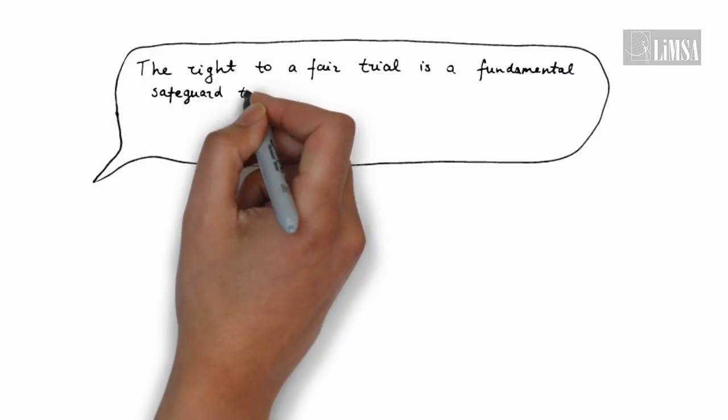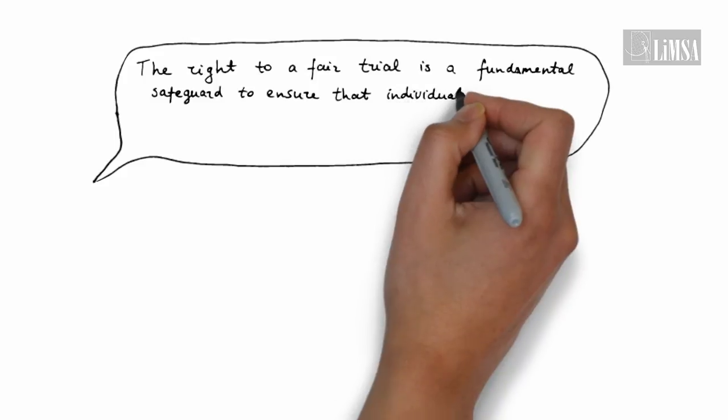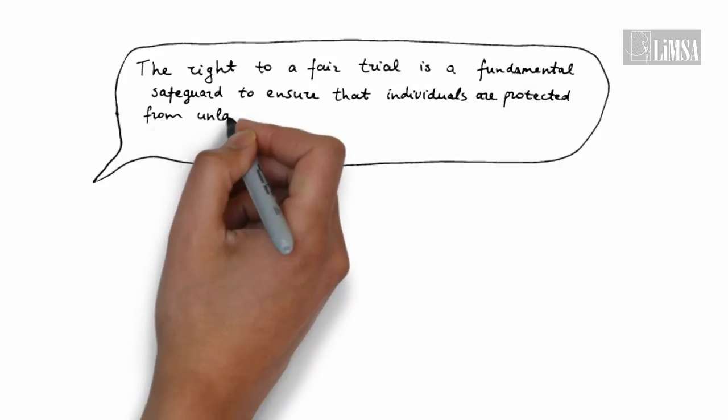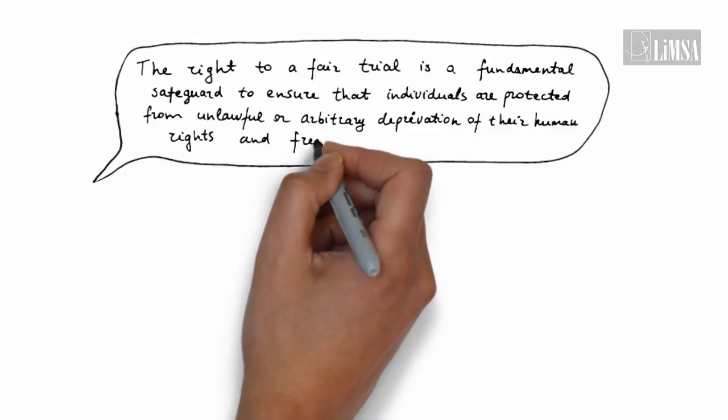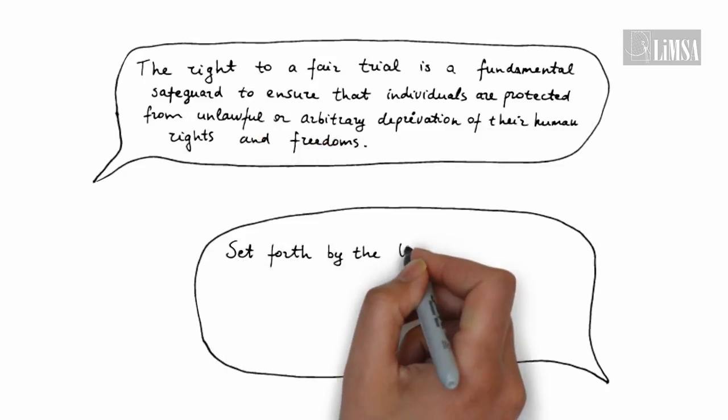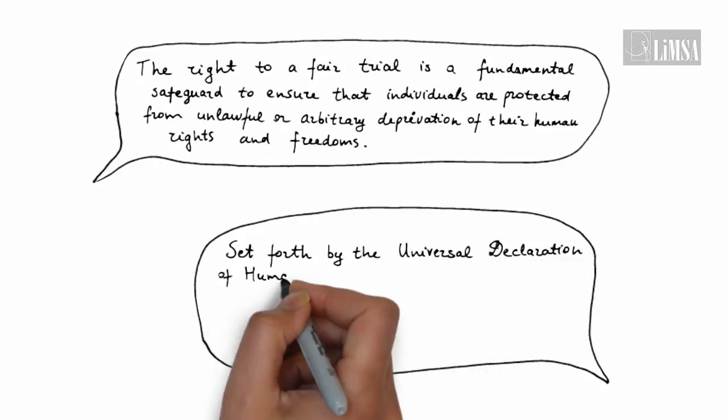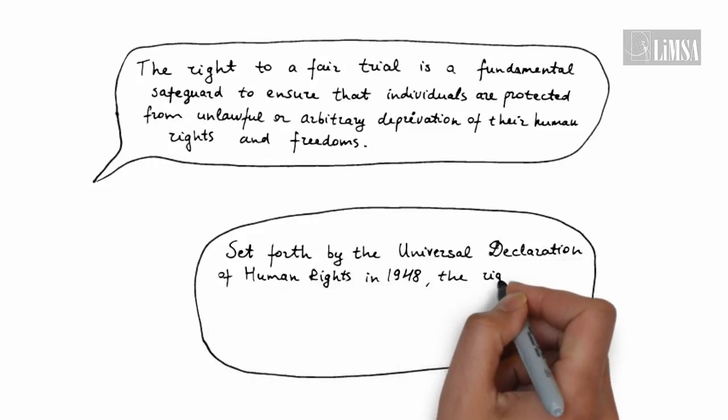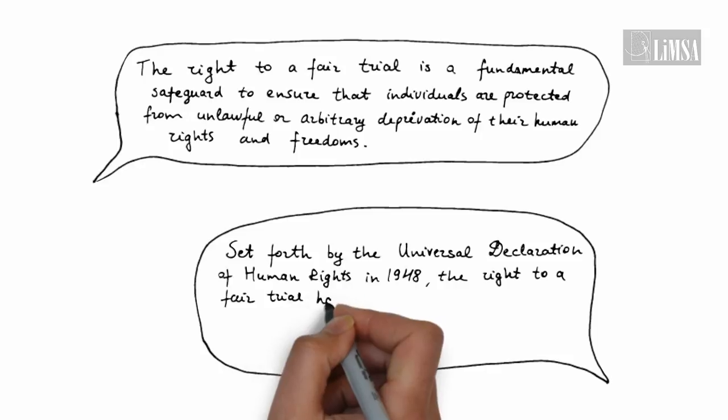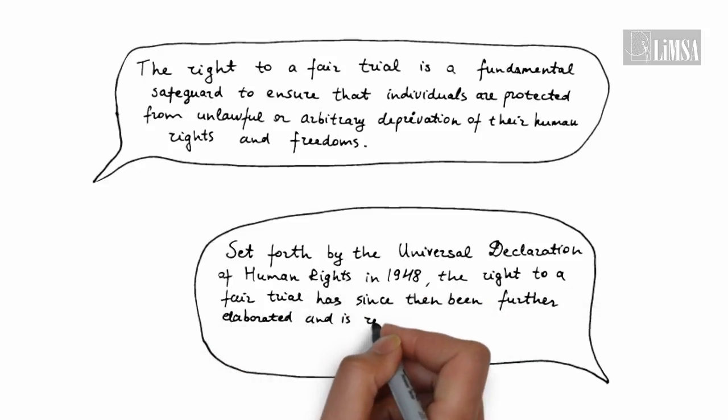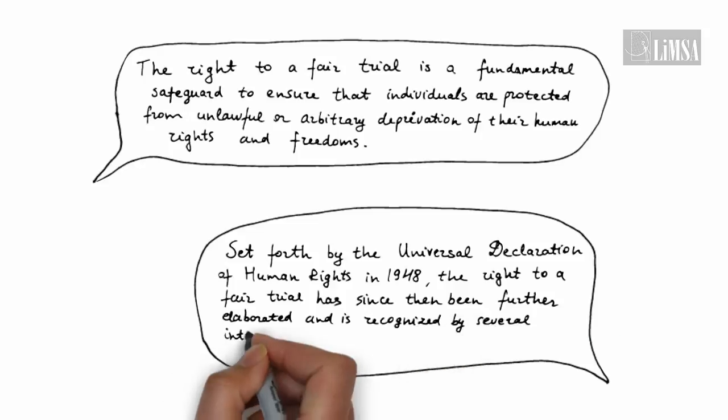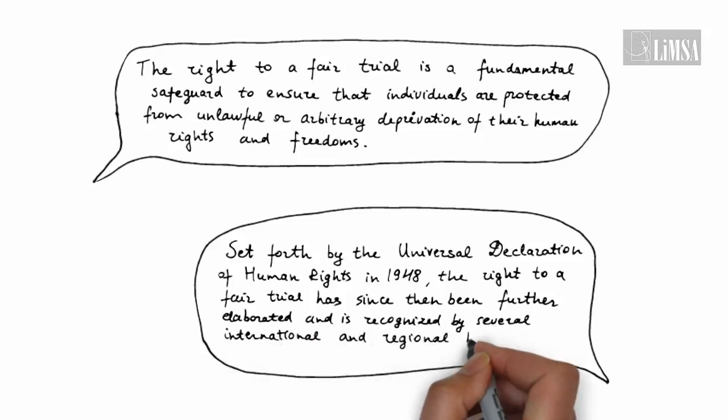The right to a fair trial is a fundamental safeguard to ensure that individuals are protected from unlawful and arbitrary deprivation of their human rights and freedoms. Set forth by the Universal Declaration of Human Rights in 1948, the right to a fair trial has since then been further elaborated and is recognized by several international and regional human rights standards.